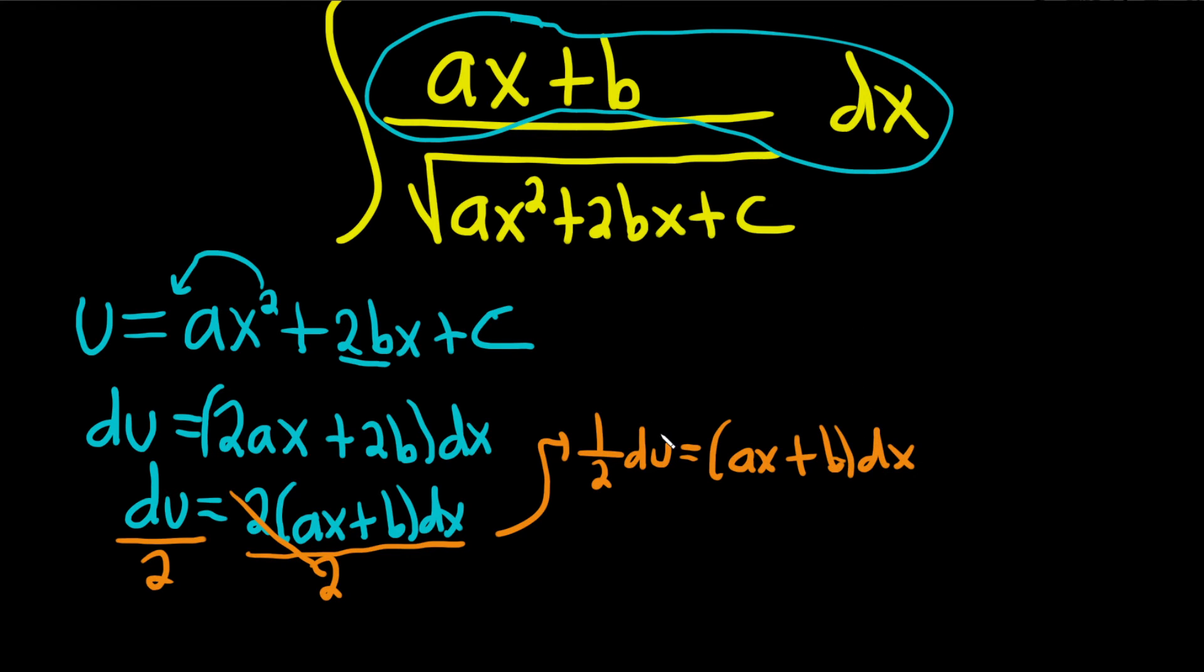Alright, so now we're ready to make our substitution. So this circle piece in blue is going to be here, right? It's 1 half du. So this is 1 half du and then we're just left with 1 over the square root of u.